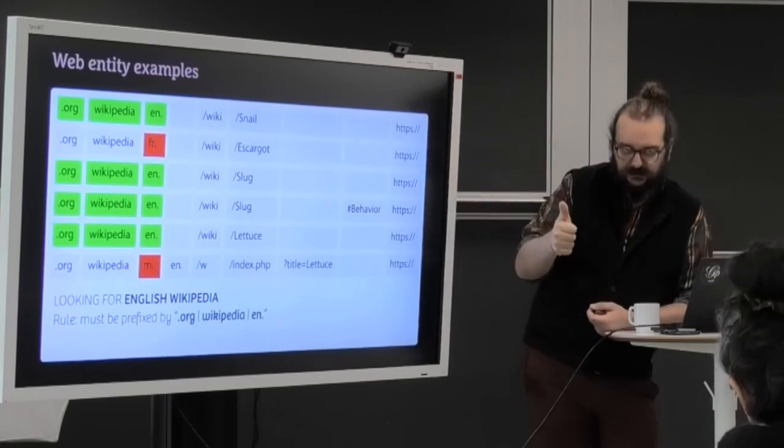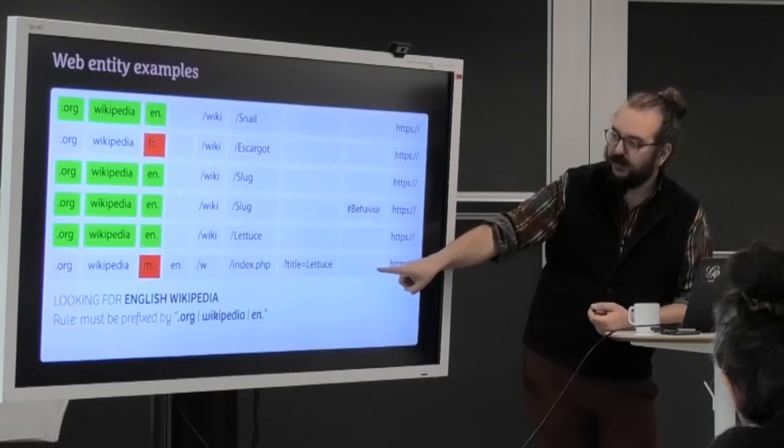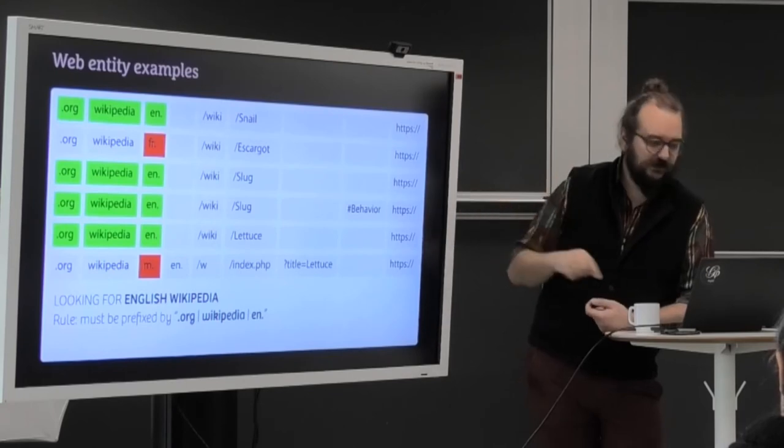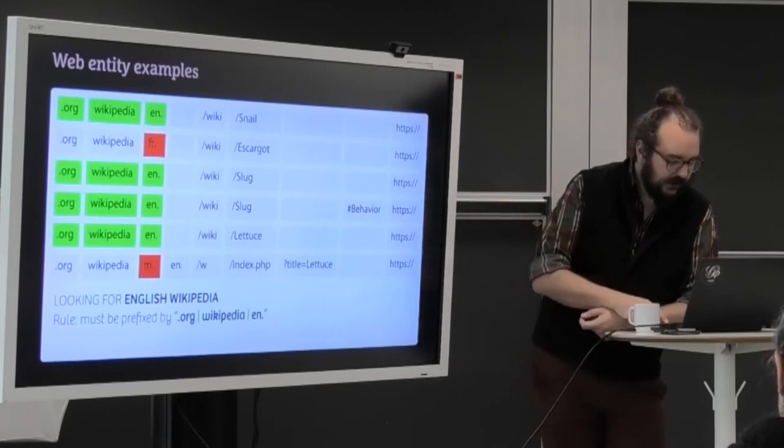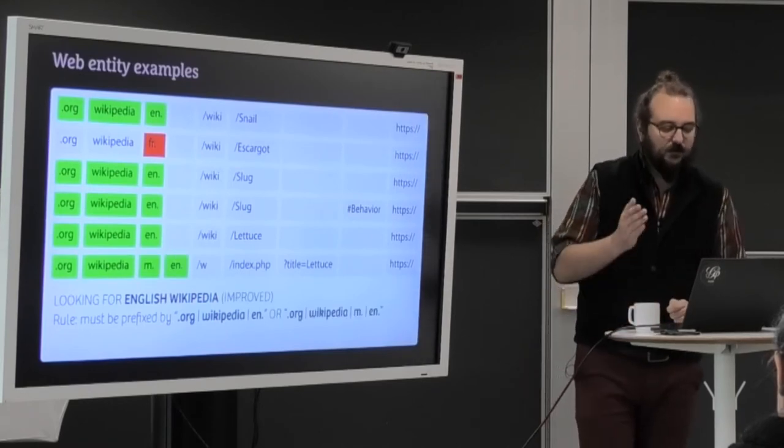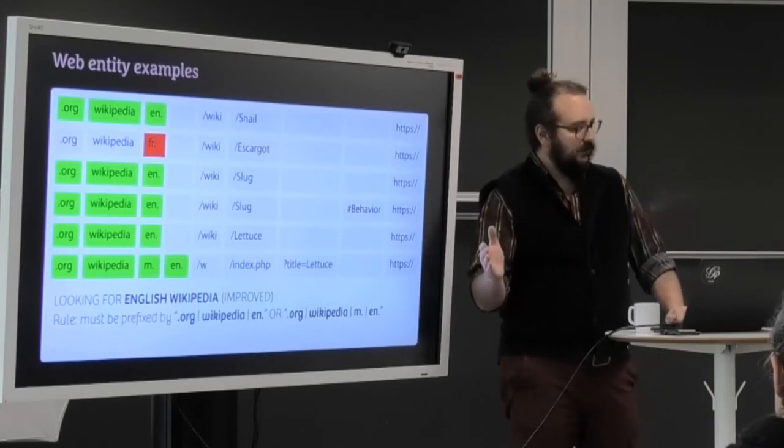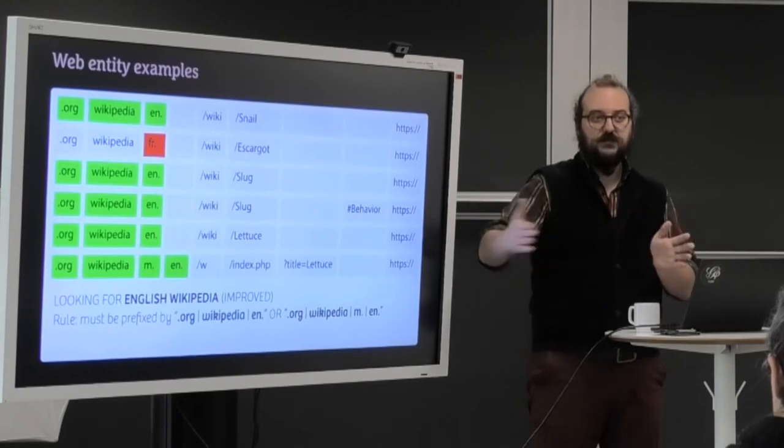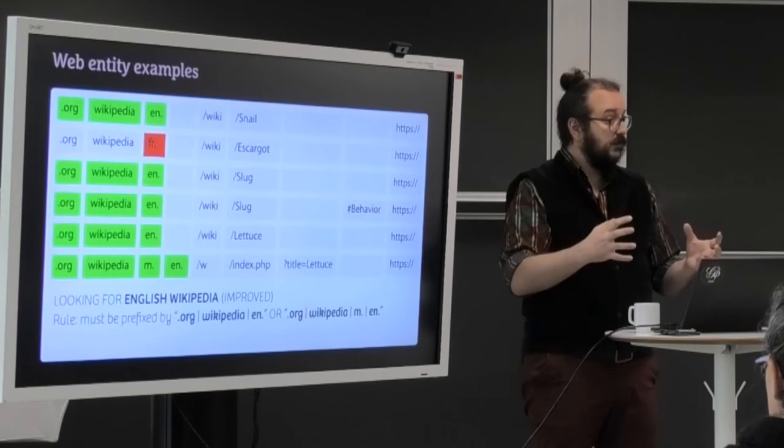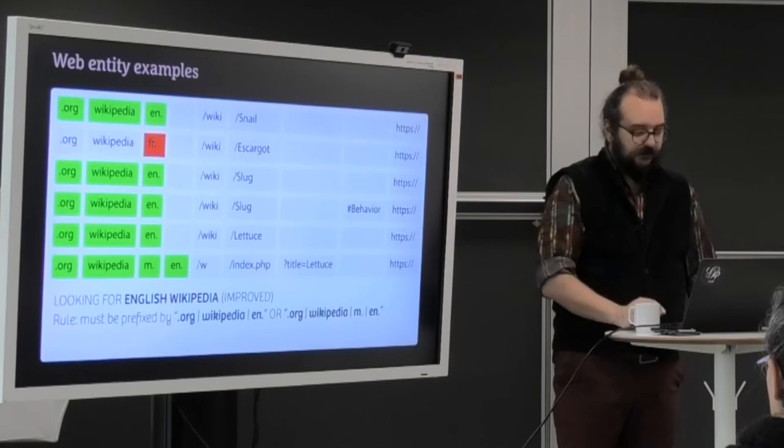So we could say it's whatever has .org Wikipedia EN or .org Wikipedia M.EN, okay? So you can add as many prefixes as you want to define one web entity. That's how you can merge web entities, right? On the side of the boundaries. And you can also separate them in different ways.